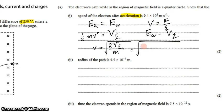That's the square root of 2 times 250 times the charge of an electron, 1.6 times 10 to the negative 19th, divided by the mass of an electron, 9.1 times 10 to the negative 31 kilograms.